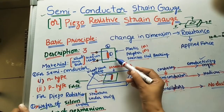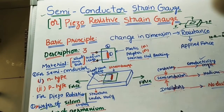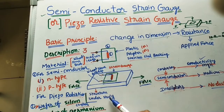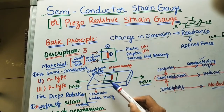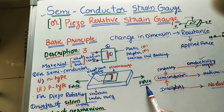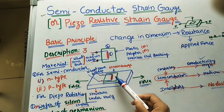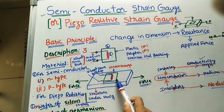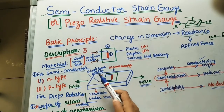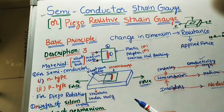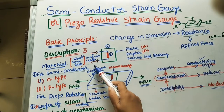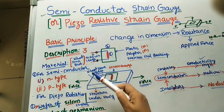Let us take the working operation of this strain gauge. To find the applied forces on a structure, first take the structure under study. Apply force F at both sides — we need to find this force. For finding the force, we stick the strain gauge on the surface of the structure and connect it using gold leads or gold wires to the Wheatstone bridge, which is outside the structure, connected with long wires.